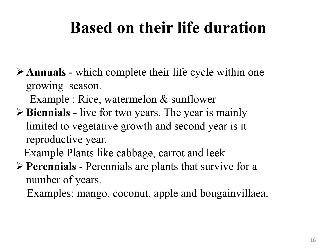Classification of plants based on their life duration: there are three types — annual, biennial, and perennial. Annuals complete their life cycle within one season; examples are rice, watermelon, maize, beet, and sunflower. Biennials live for two years; the first year is mainly limited to vegetative growth and the second year is the reproductive year. Plants like cabbage, carrot, and honey complete their life cycle in two seasons. Perennials survive for a number of years; examples include mango, coconut, apple, and bougainvillea.